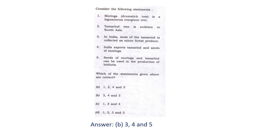It is given that Moringa is a leguminous evergreen tree. But as we have discussed above, depending upon the species and climate, Moringa may be evergreen or deciduous in type. So statement 1 is incorrect.